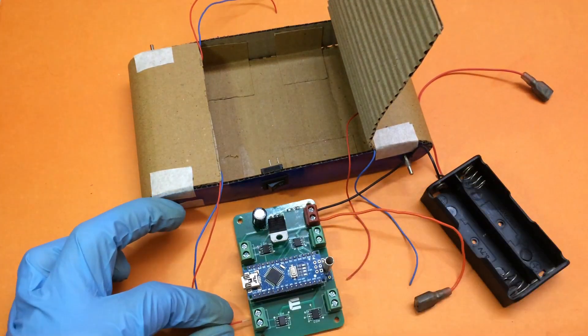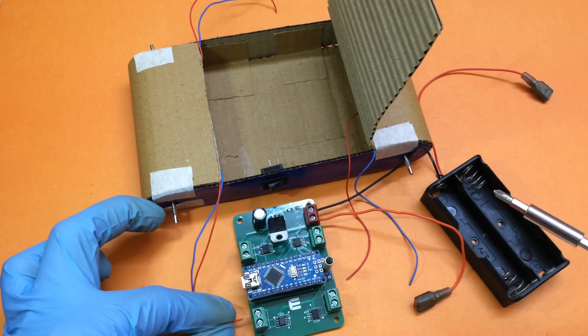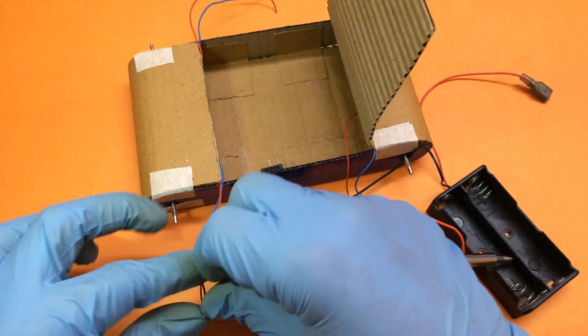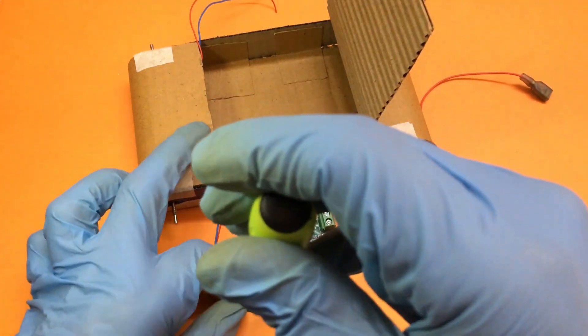Connect all the motor wires to the respective location. Left side panel wires will go to motor driver 1 and motor driver 3, and the other side wires will go to motor driver 2 and motor driver 4.